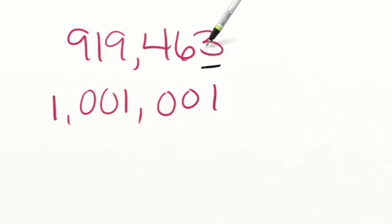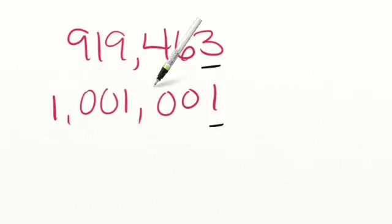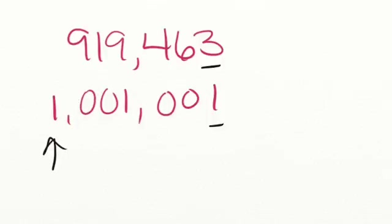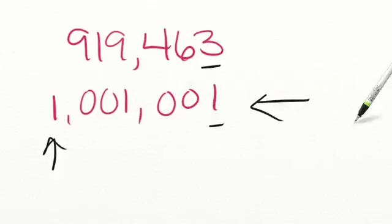So we have a three in the ones place and a one in the ones place. We have our tens place lined up, hundreds place, thousands, ten thousands, hundred thousands, and millions place. So now our next step is to move over to the largest place value and compare those numbers. Our top number doesn't have a value in the millions place, so that means that our bottom number is going to be the largest number.